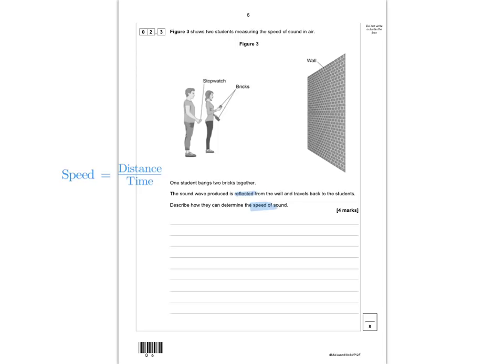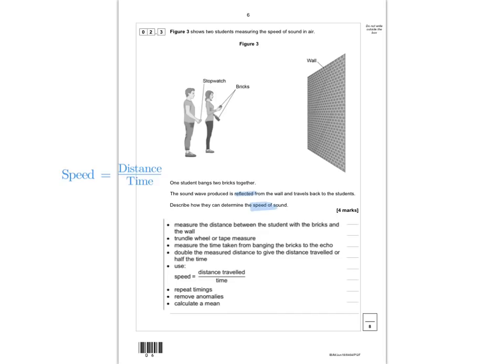The indicative content you should include: measure the distance between the student and the wall using a trundle wheel or tape measure; measure the time from banging the bricks to hearing the echo; double the measured distance (or halve the time if measuring one way); and use speed equals distance over time. You could also repeat timings, remove anomalies, and calculate a mean.